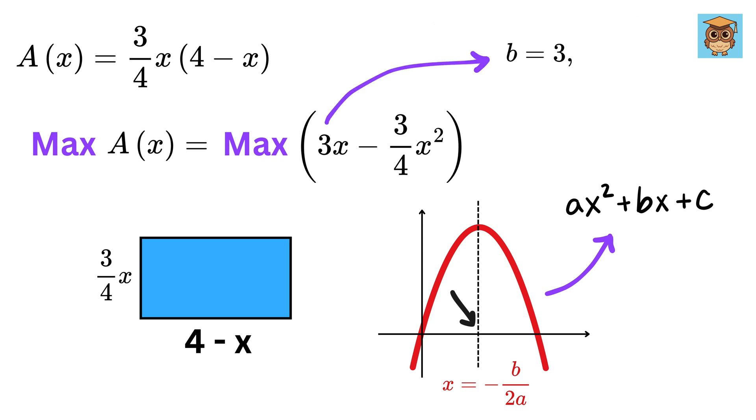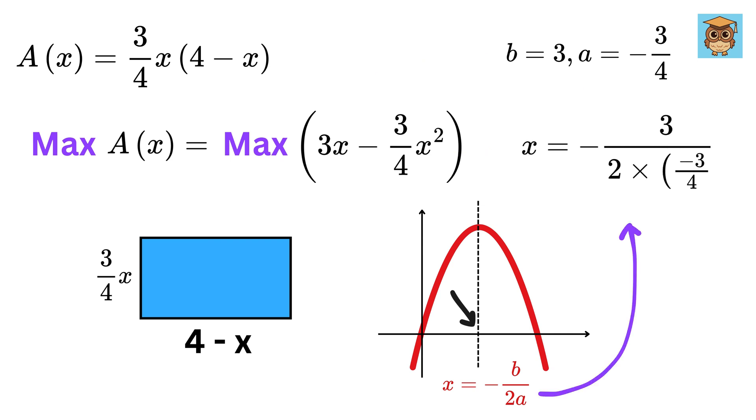For our case, the value of b is 3, and the value of a is minus 3 by 4, and thus x will be minus 3 over 2 times minus 3 by 4, or x equals 2.